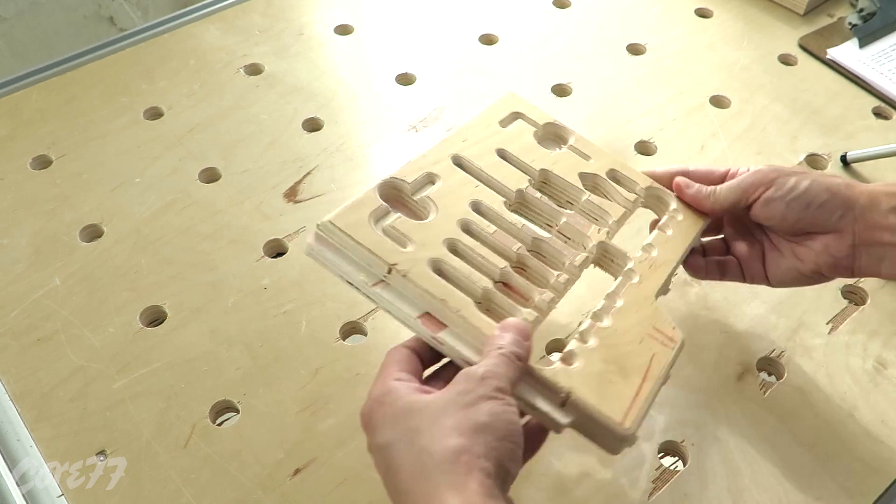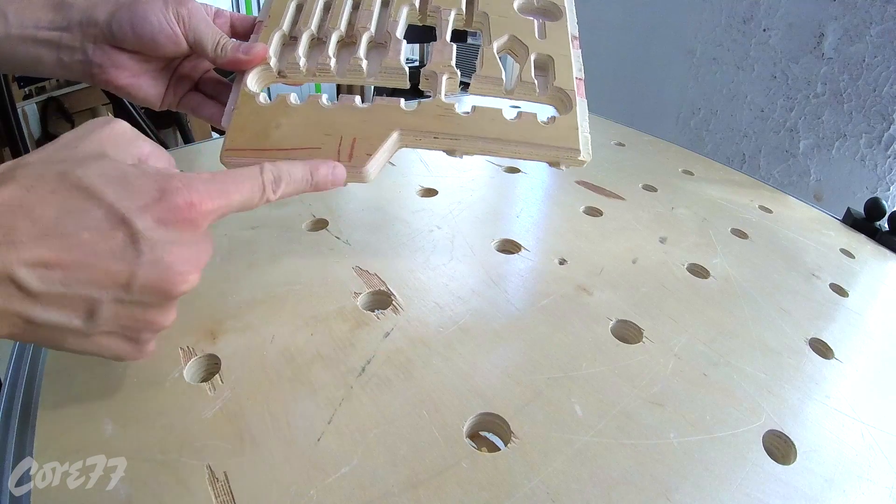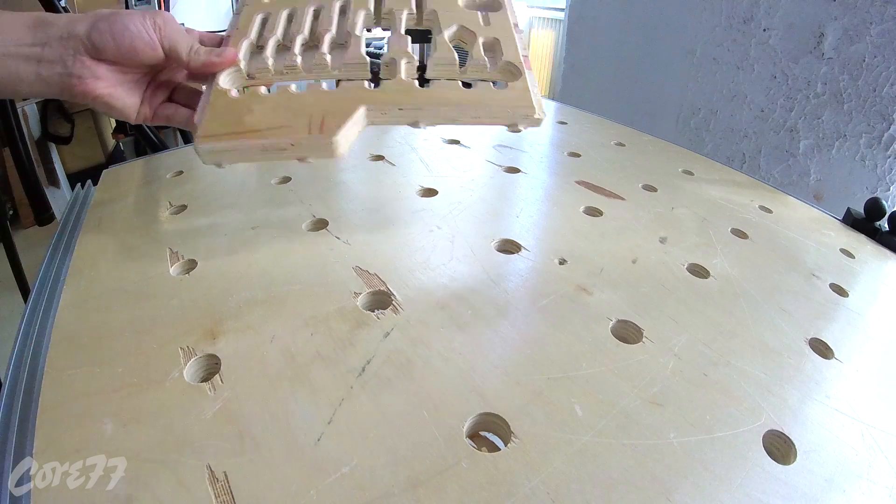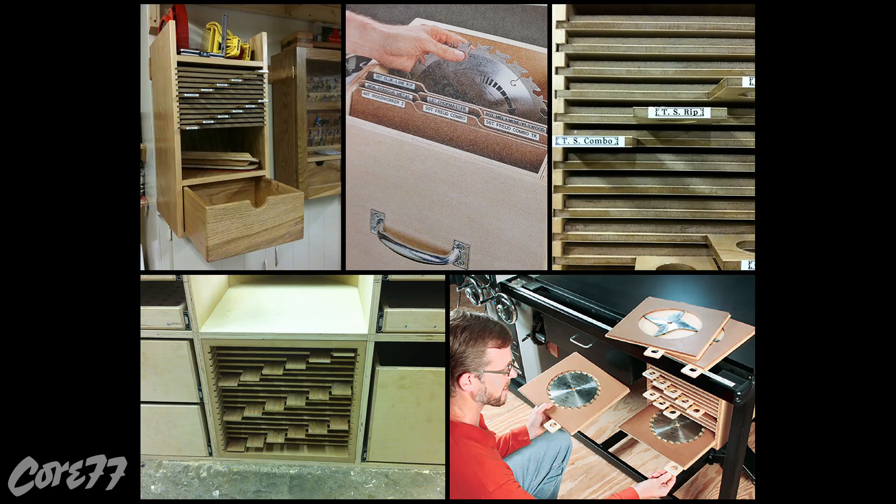Now I wasn't trying to be cutesy and do that thing that Apple used to do where the shape is referencing a file folder. This is purely form follows function. I should also point out that this is not an original idea. I've seen photos online of people storing saw blades in the shops on masonite sheets cut out with a little tab like this.